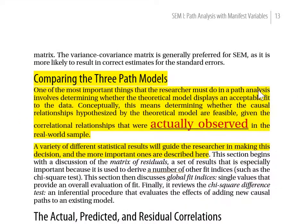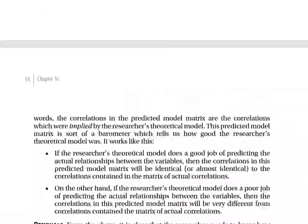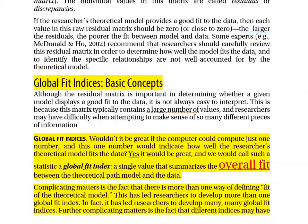On page 13, the section is 'Comparing the Three Path Models.' One of the most important things a researcher must do in path analysis involves determining whether the theoretical model displays an acceptable fit to the data — meaning whether the causal relationships hypothesized are feasible given the correlational relationships actually observed in the real-world sample. A variety of statistical results guide this decision.